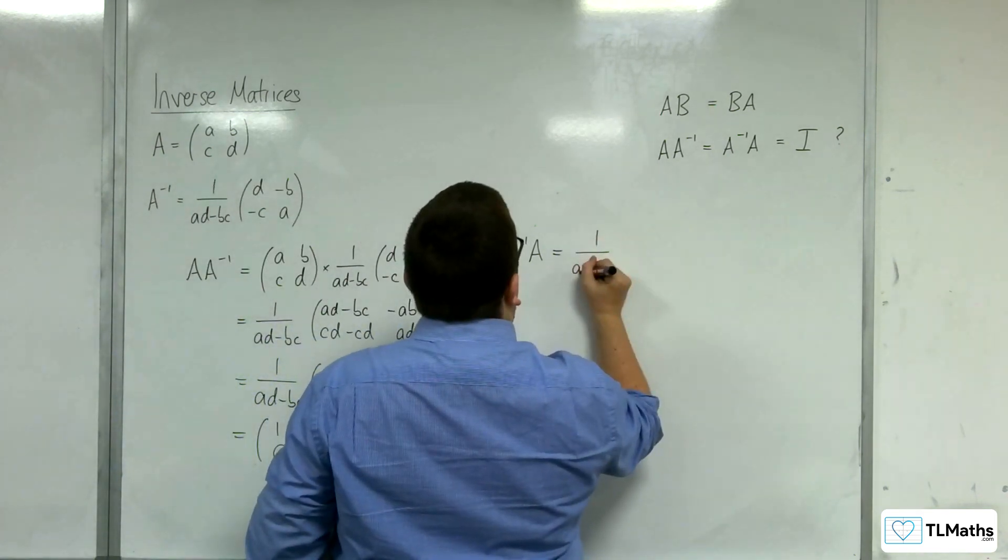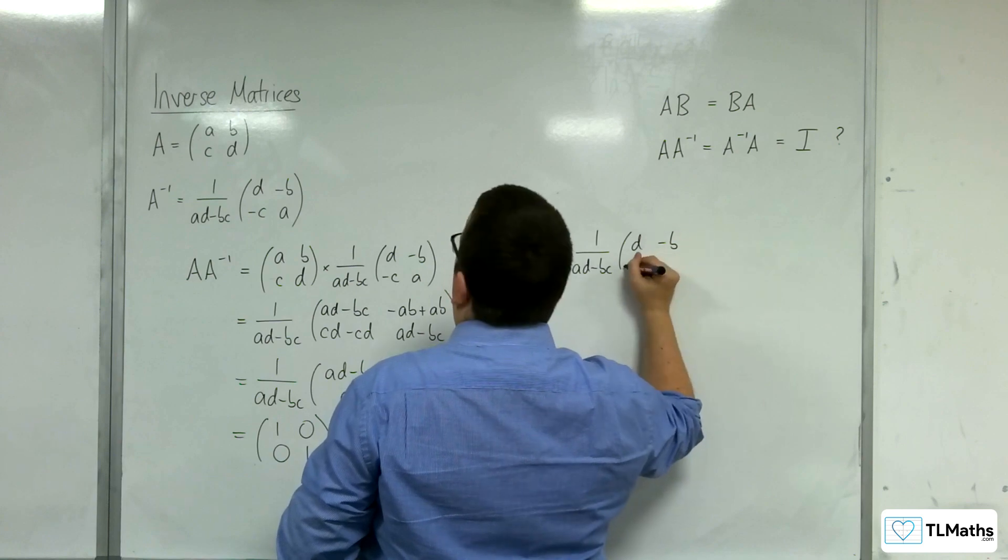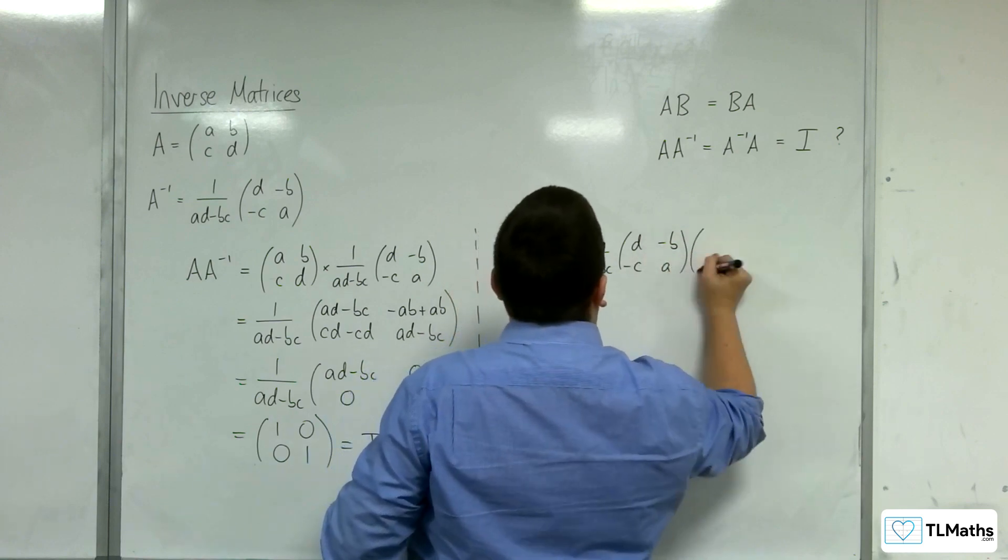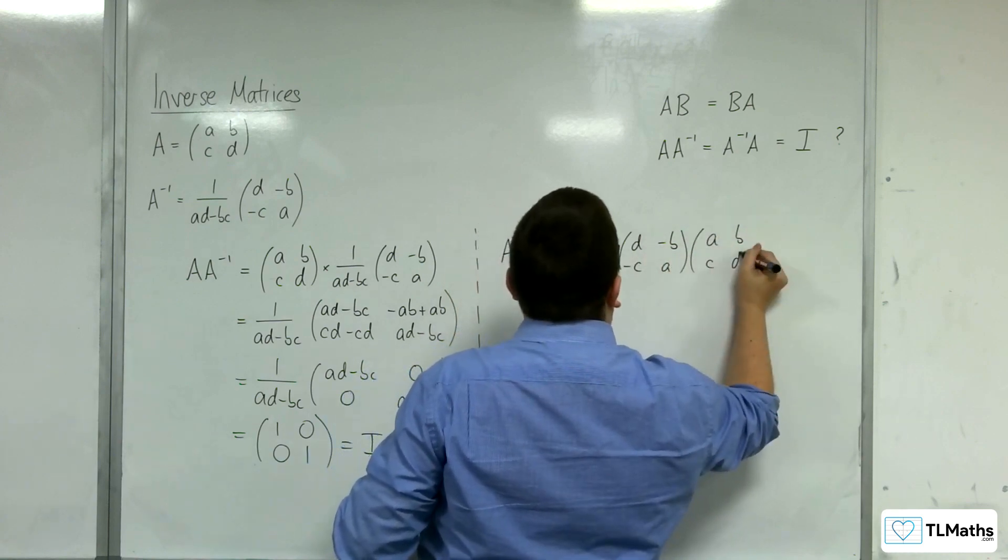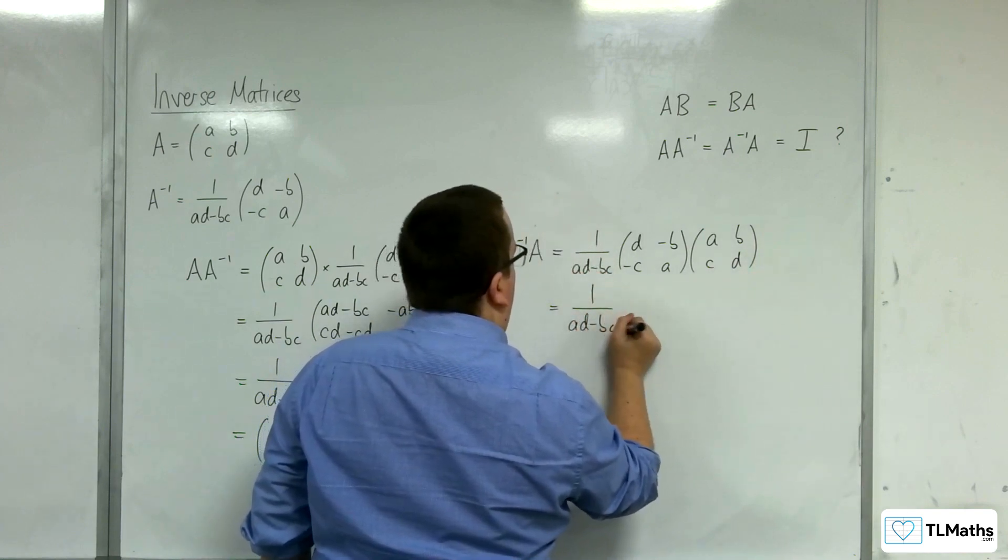So we've got 1 over AD - BC, D, -B, -C, A, multiplying A, B, C, D. So the 1 over AD - BC can stay where it is.